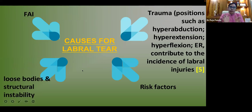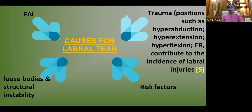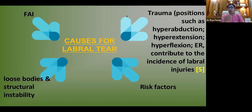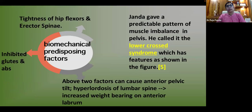Causes of labral tears can be divided into traumatic and atraumatic. Traumatic causes are usually seen in young athletes — falls, impacts, or forced hyper-abduction, hyper-extension, hyper-flexion, or external rotation positions. Atraumatic causes include FAI (the most important), loose bodies, and structural instability. Risk factors will be covered in later slides.